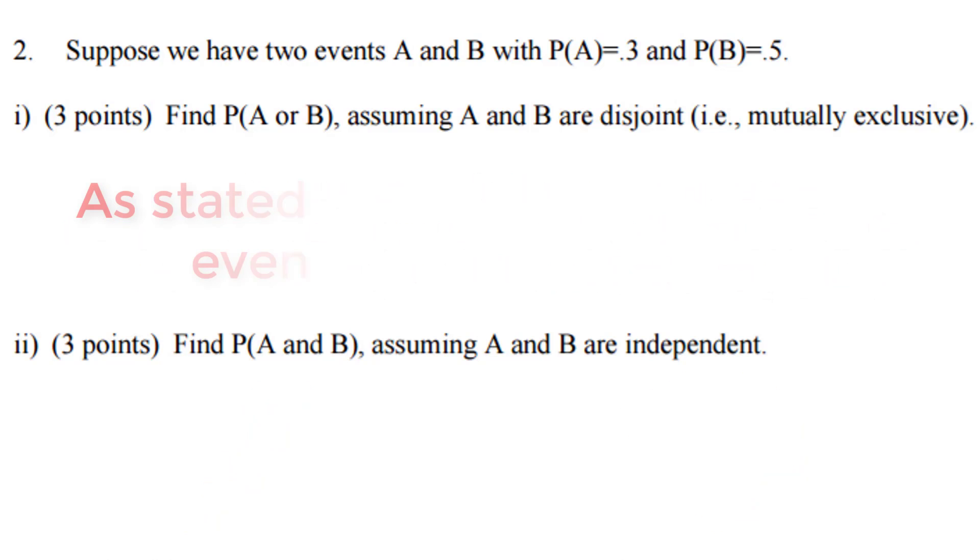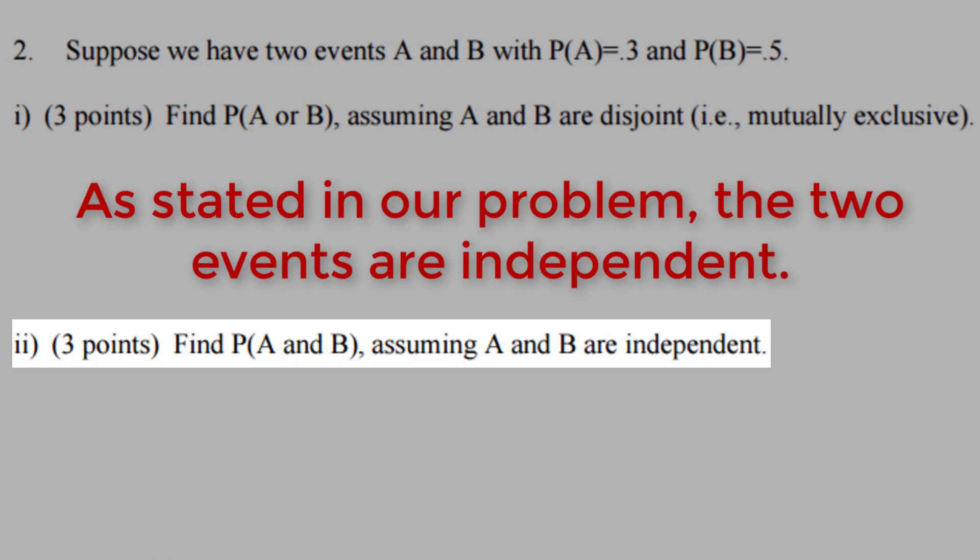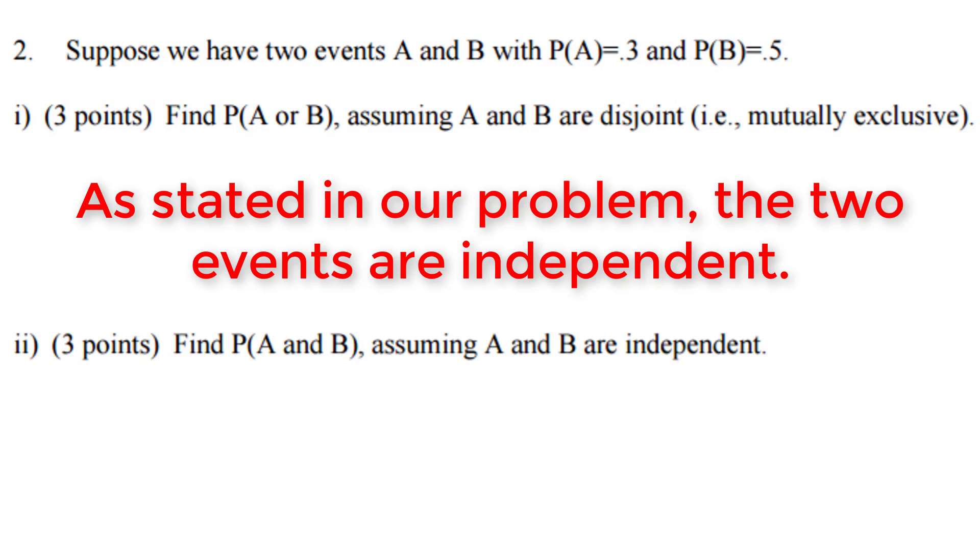So this question gives it to you and says that A and B are independent. If we meet the condition of independence, we can simply multiply through. So once again, we can take the probability of A being 30% and the probability of B being 50% and get 30% times 50% is 0.15.